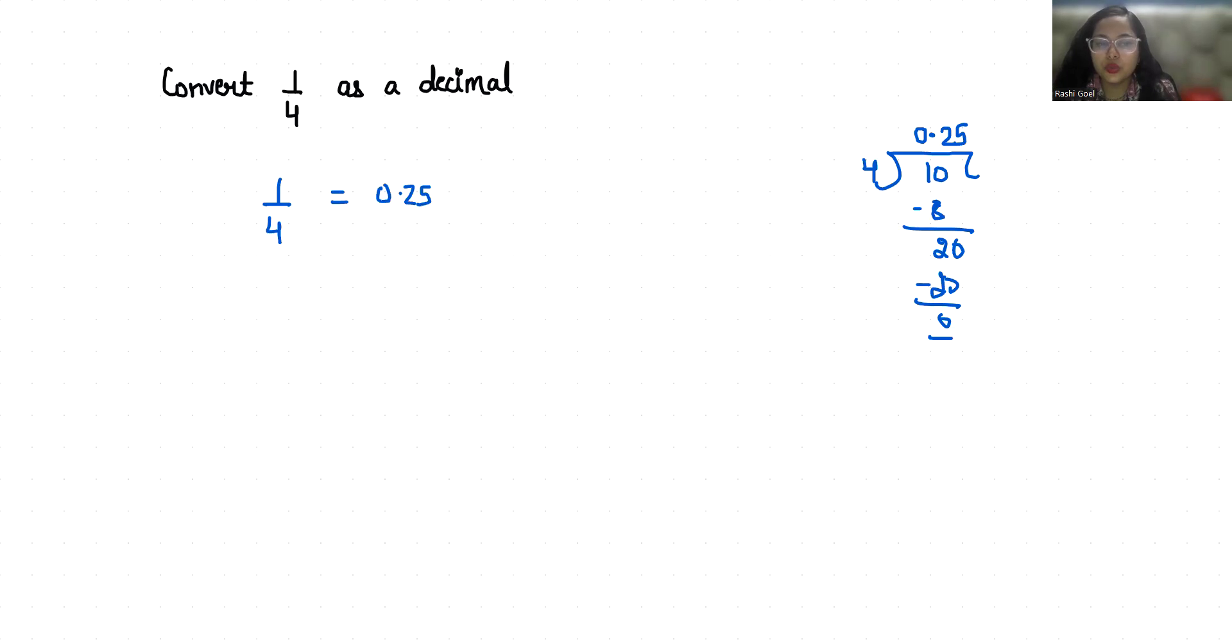Method 2: You can use 1 by 4. To convert or write any number as a decimal, your denominator will be in terms of 1 by 10, 1 by 100, 1 by 1000, so it will be easier for